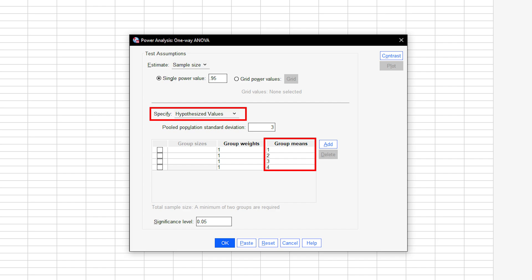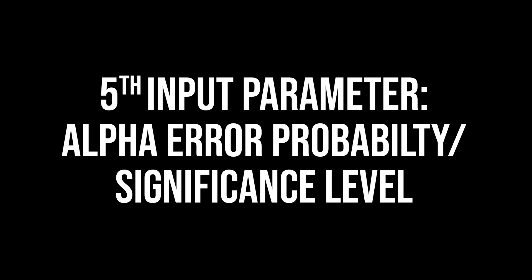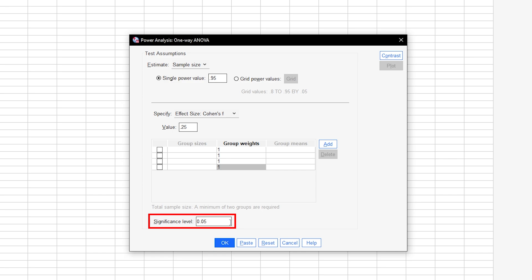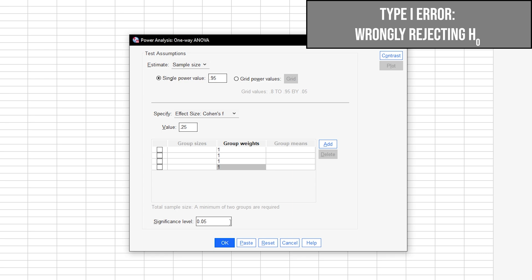If you choose hypothesized values, you can further enter group means. The final input parameter needed is the significance level, aka the alpha error probability, which is the probability of committing a type 1 error. In short, this is the probability of wrongly rejecting the null hypothesis. 5% is the typical convention. 1% is a bit more restrictive. A value above 5% should be avoided.